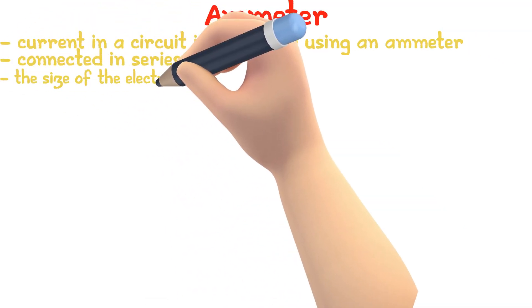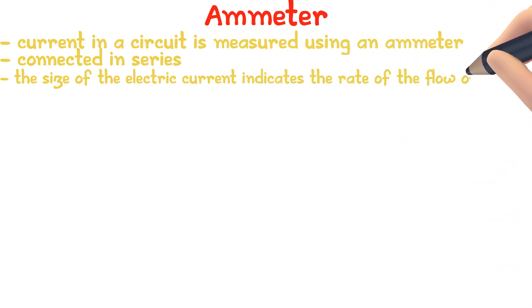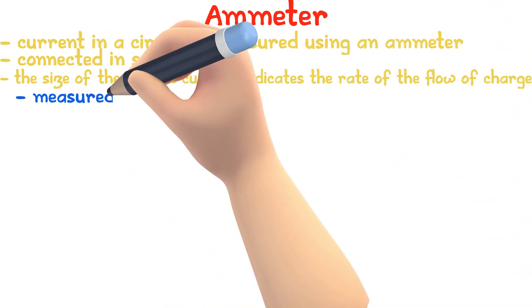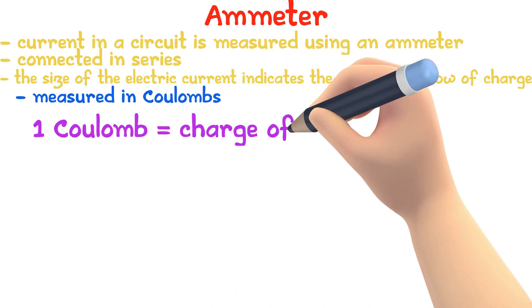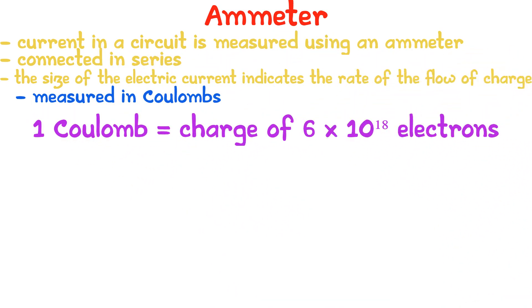Electric current size indicates the rate of the flow of charge. Electric charge is measured in coulombs. One coulomb is equal to the charge of 6 into 10 to the power 18 electrons, or 6 million million million electrons.